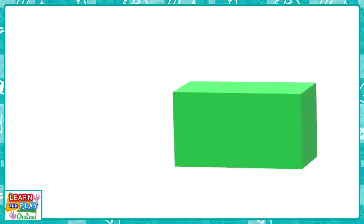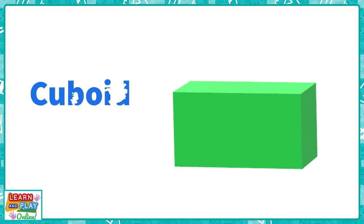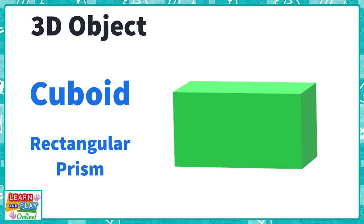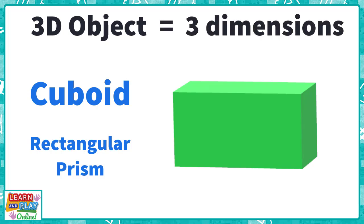This 3D object has two names. We can call it a cuboid or a rectangular prism. It looks like a stretched out cube, don't you think? It is a 3D object because it has three dimensions, which are the length, the width, and the height.